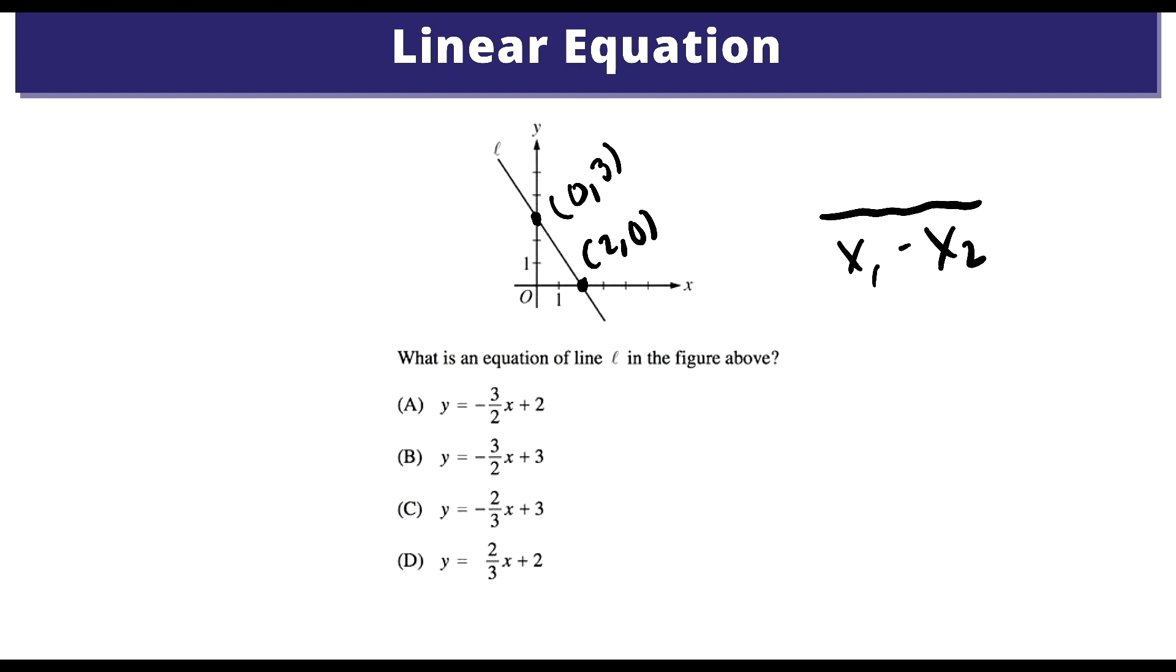Okay, and we're going to plug this into the equation: Y1 minus Y2 over X1 minus X2. Okay, so let's do that. We're going to put 2 here minus 0. And then we're going to do 0 minus 3. So that equals negative 3 over 2.